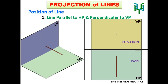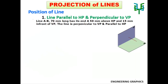We will now discuss the different positions of a line in detail. For a line parallel to HP and perpendicular to VP: when a line is parallel to HP, we will have the true length of the line in the plan. Here the line is perpendicular to VP, and hence the line can be seen as a point in the elevation.